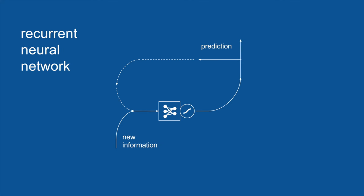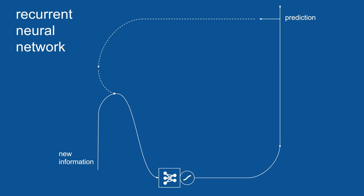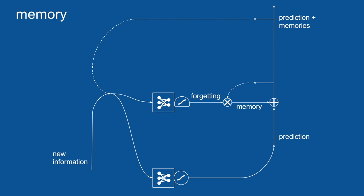In order to overcome this, we take our recurrent neural network, expand it, and add some more pieces. The critical part we add is memory — we want to be able to remember what happened many time steps ago. To explain the new symbols: the cross in a circle is element-by-element addition, and the X in a circle is element-by-element multiplication.